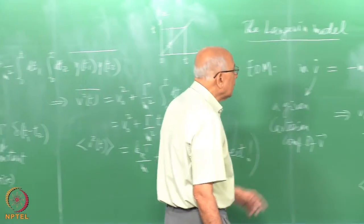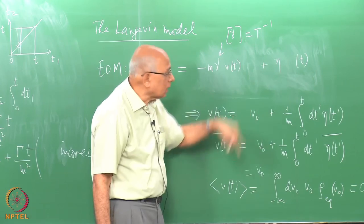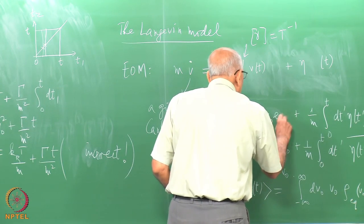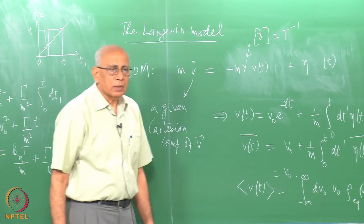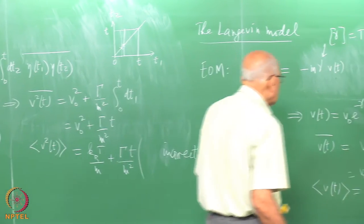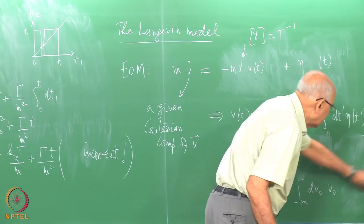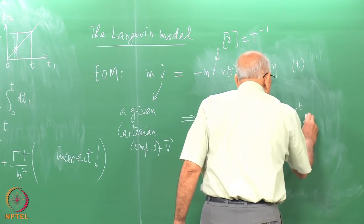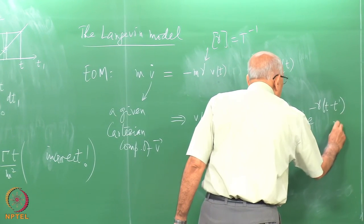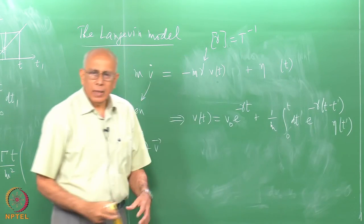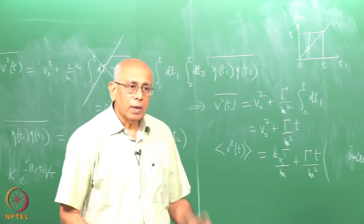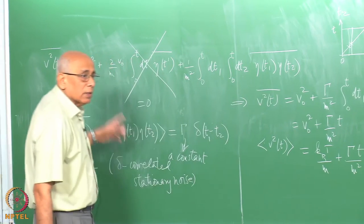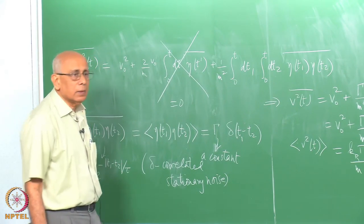This is the Langevin model we are going to use. With the drag term included, m V-dot = −mγV + eta(t). I will stop here today since we have run out of time. Once you put this in and make the same assumptions about eta(t), the solution becomes v(t) = v_0 e^(−γt) + (1/m) integral_0^t dt' e^(−γ(t−t')) eta(t'). For next time, find the conditional mean, the full mean, the conditional mean square, and the full mean square of v(t) under this corrected Langevin equation.